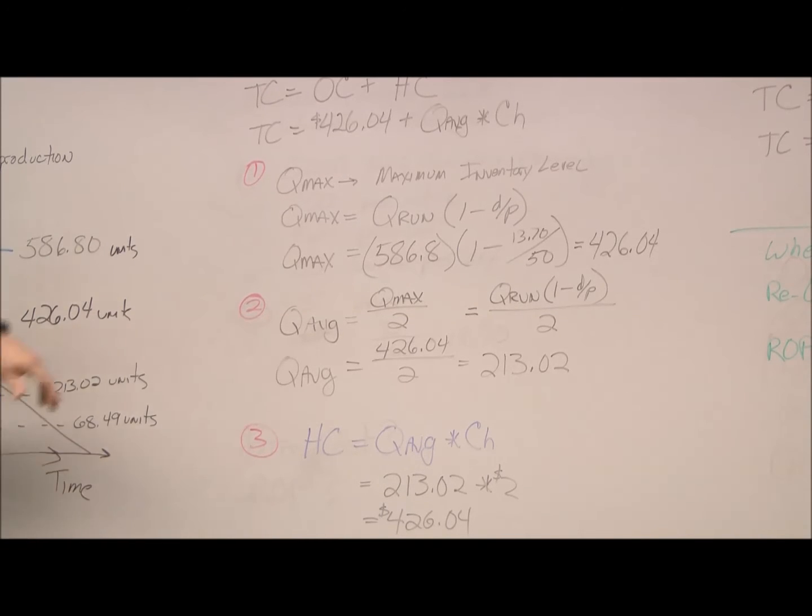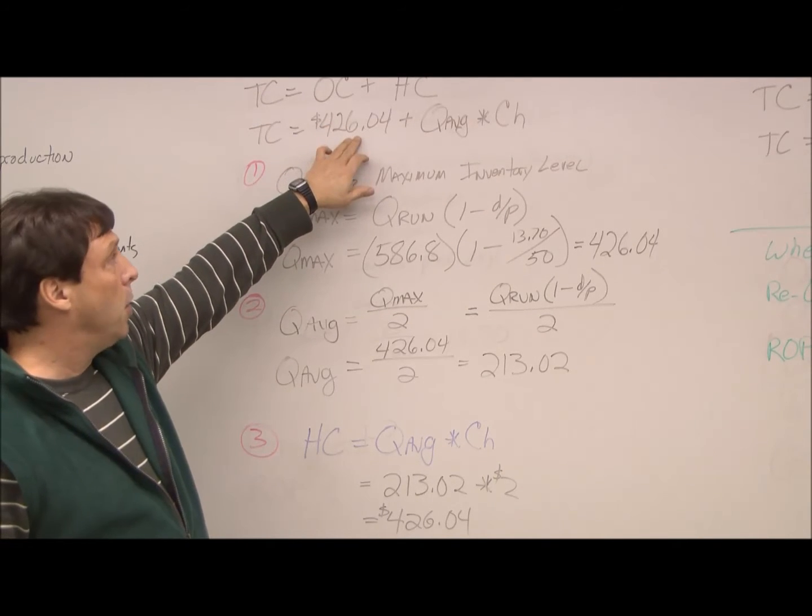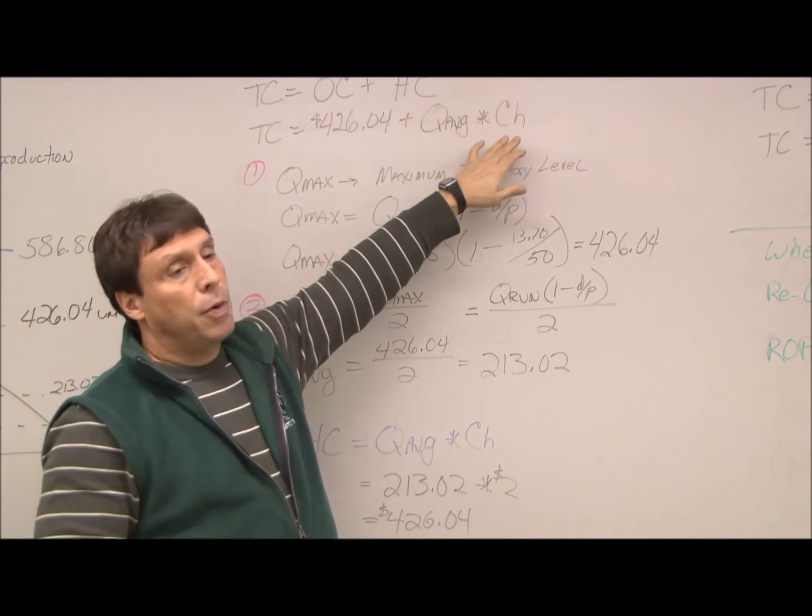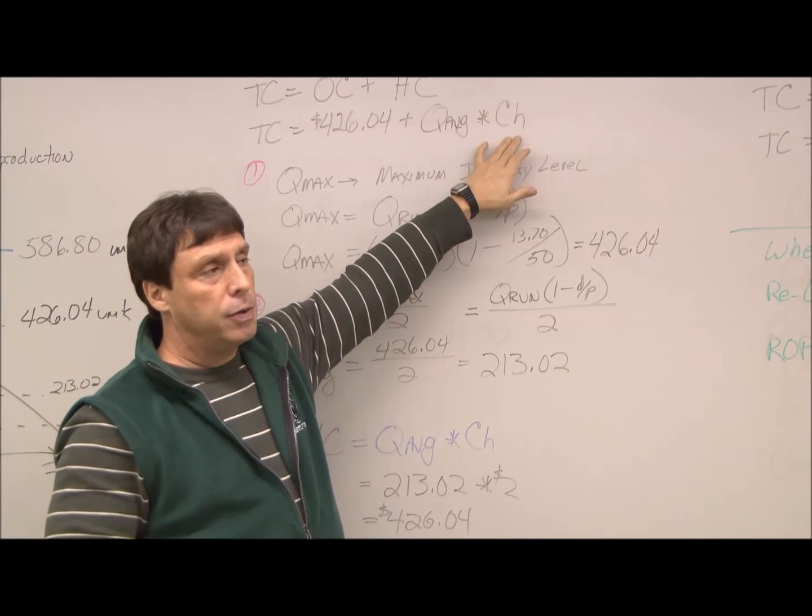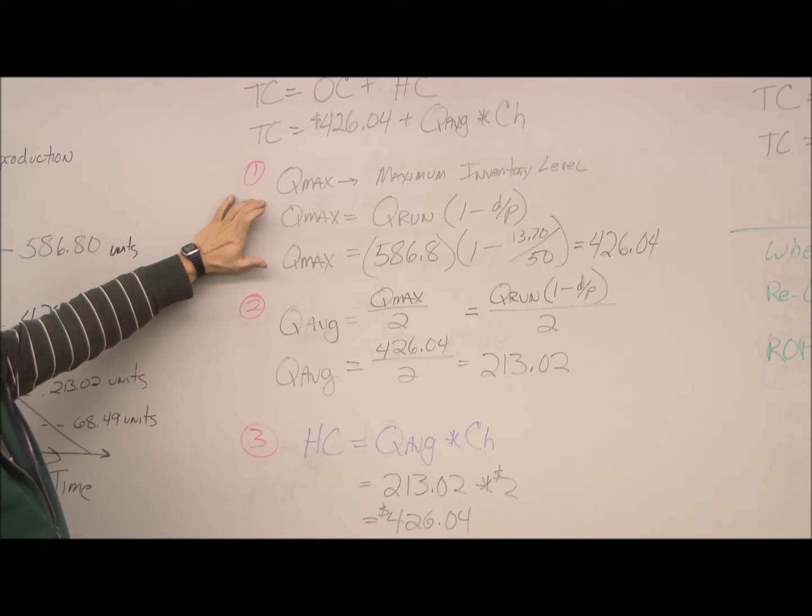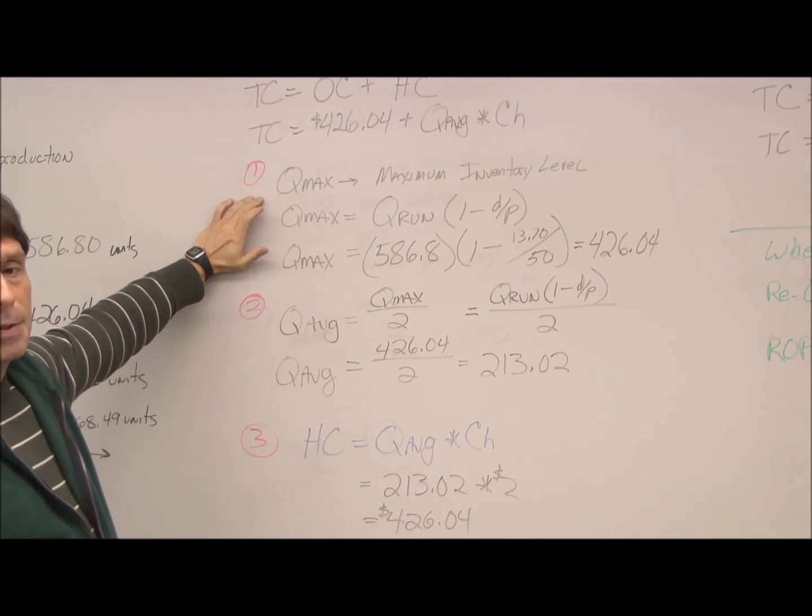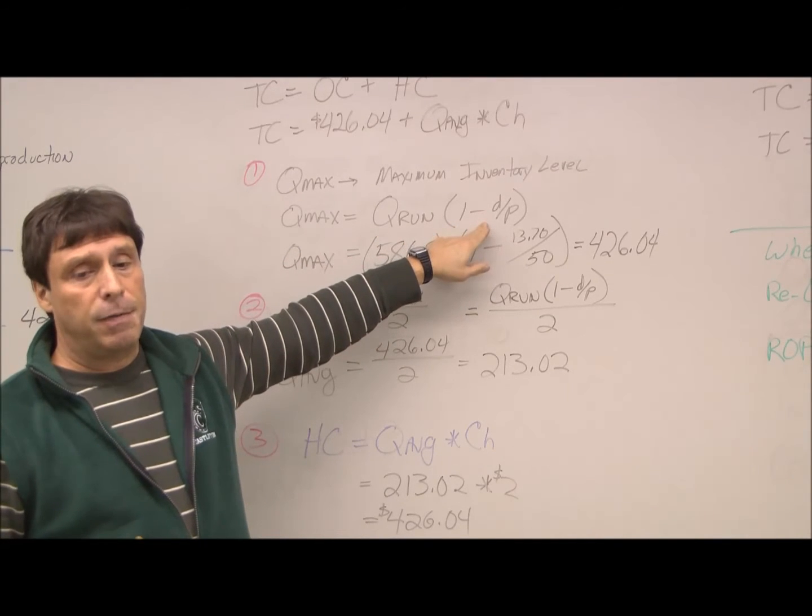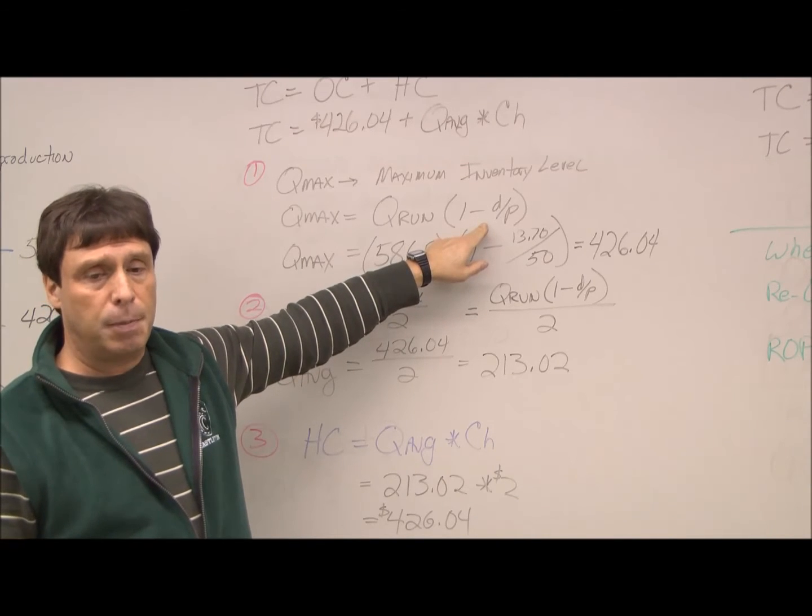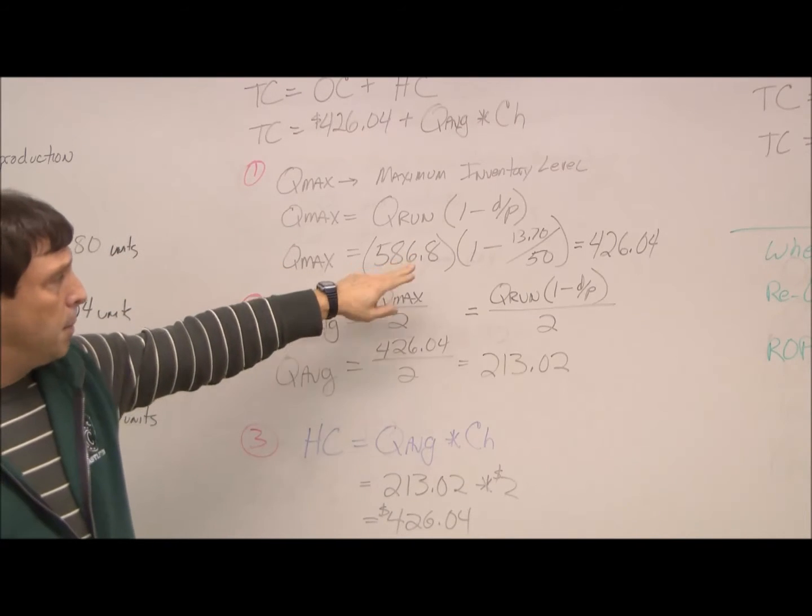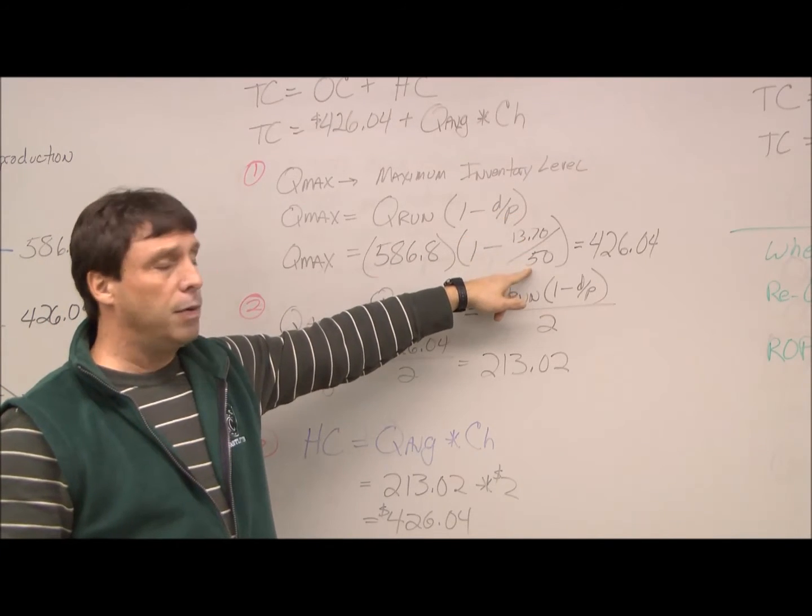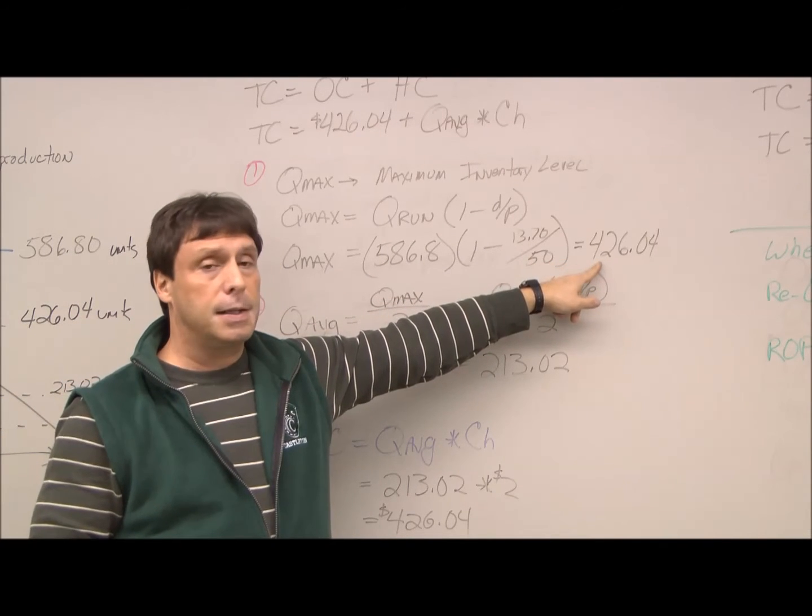Next we're going to take a look at our holding costs. We just computed our ordering or setup costs. Now we need to figure out this part of the equation, which is our holding costs. It's average inventory times the amount of the per unit charge for holding that inventory or keeping it in inventory. So before we can find the average, we have to find Q max. This is the maximum inventory level. Remember that in a production problem or production model, Q max does not equal Q run. So this is the formula we use. We have our Q run. We multiply it by our fraction of basically how much is used up during the production run, and we'll never see the inventory shelves. So simply plugging the numbers in, we've already calculated Q run at 586. We know our daily demand is 13.7. Our production rate is 50 units. So that gives us an answer of 426.04 units.